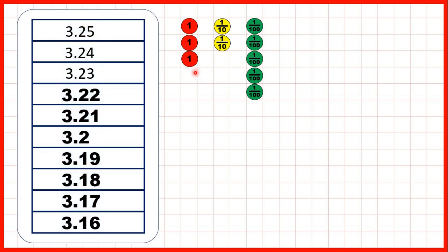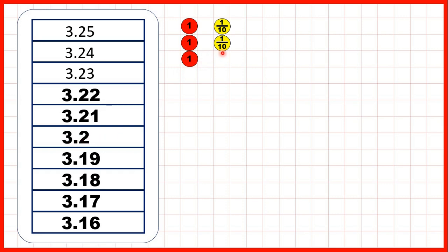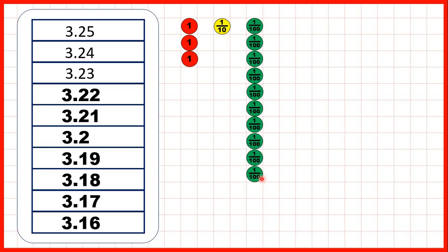Again, we can use place value counters to see what's happening. We start with 3.25, so that's three wholes, two-tenths, and five-hundredths. We're counting back in hundredths, so when we get to 3.2, we have three wholes and two-tenths. But to count back in hundredths, we need to take one of our tenths counters and exchange it for ten-hundredths counters. Then we can keep on counting back in hundredths until we get to 3.16, or three wholes, one-tenth, and six-hundredths.